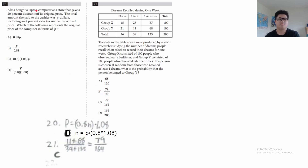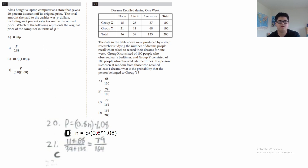Question 20: Alma bought a laptop at a 20% discount, then paid 8% sales tax on the discounted price, for a total of P dollars. Which of the following represents the original price in terms of P? A 20% discount multiplies by 0.8, and an 8% tax multiplies by 1.08. To undo these adjustments, divide by 0.8 and by 1.08. The answer is D.